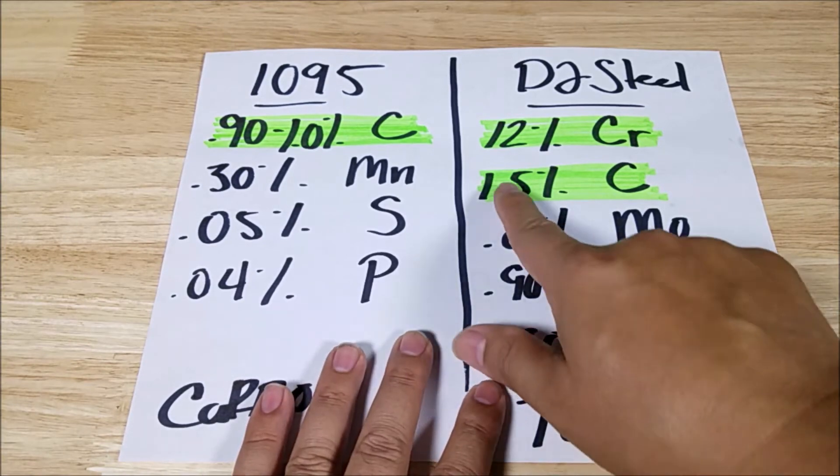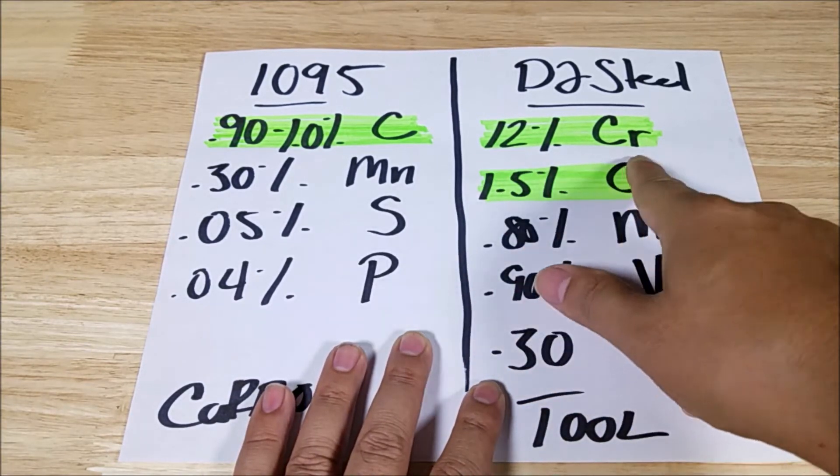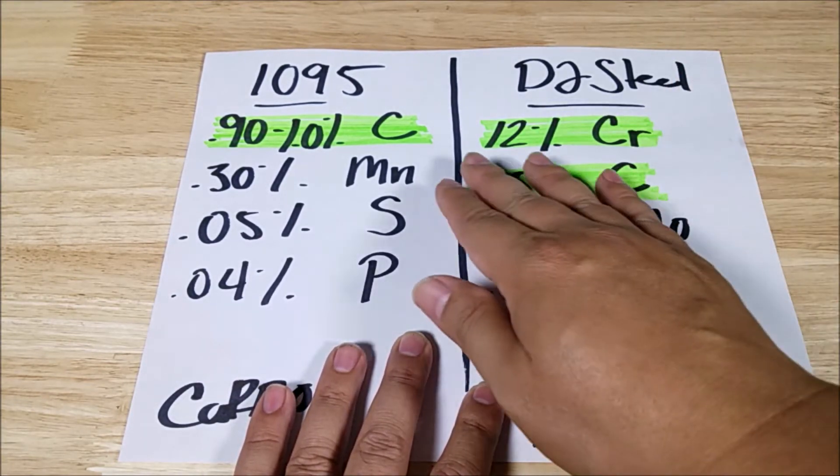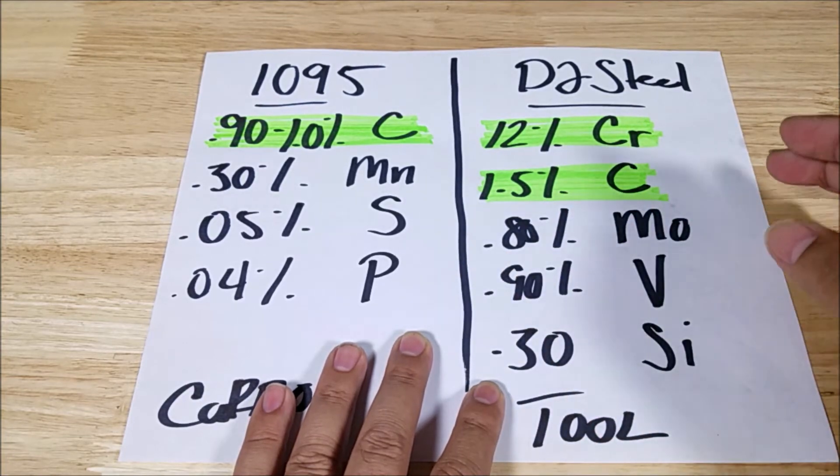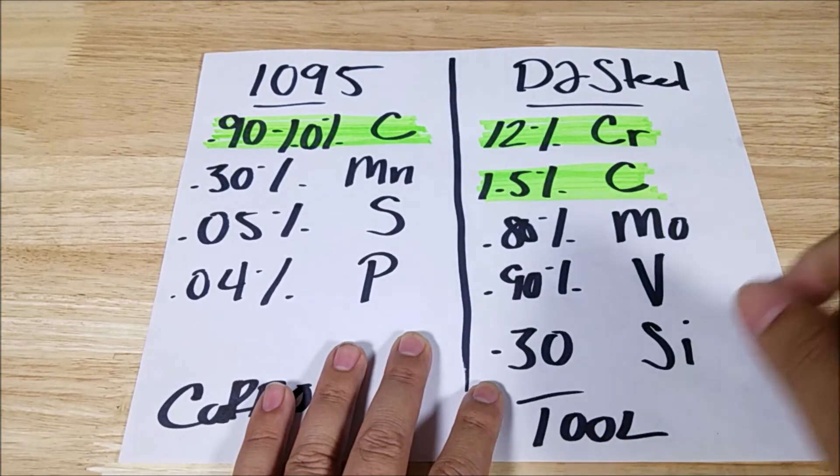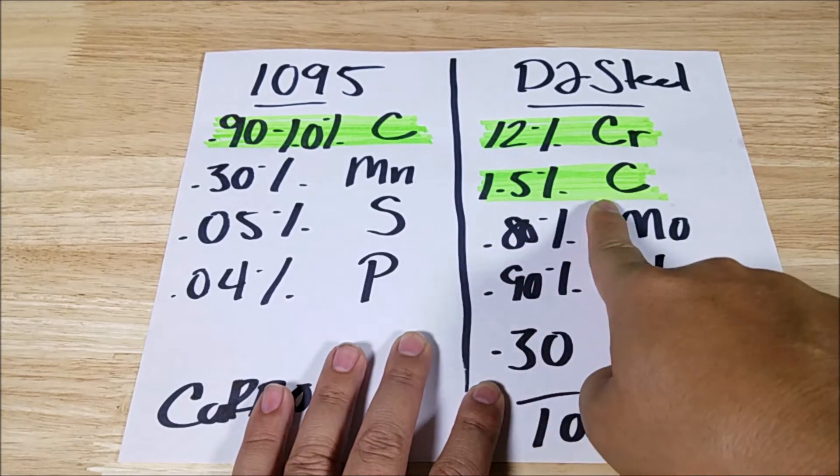On the other side, look at the level of chromium in here. So 12% or maybe like 10, 11, 12% chromium. That's a lot in there. So it's going to be very resistant to rust. Corrosion resistance is great. But look at the level of carbon in here.